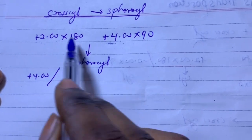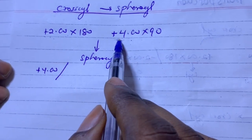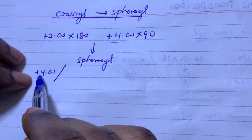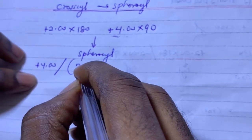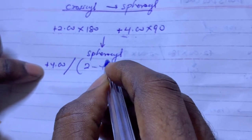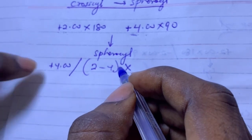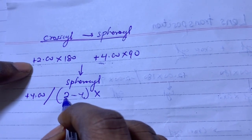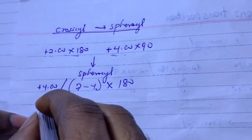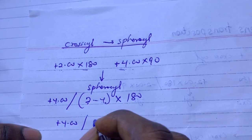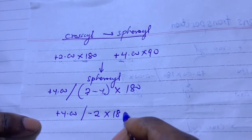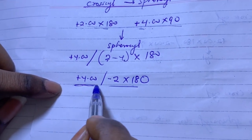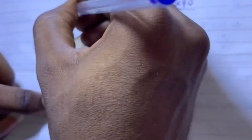The more plus becomes the sphere component. So plus four is my sphere. Then I take the power difference from the cylinder I didn't pick: two minus four equals minus two. I pick the axis of the one I didn't pick — the minus two had axis 180 — so the cylinder part is minus two axis 180. The final sphero-cylinder is: plus four combined with minus two axis 180.